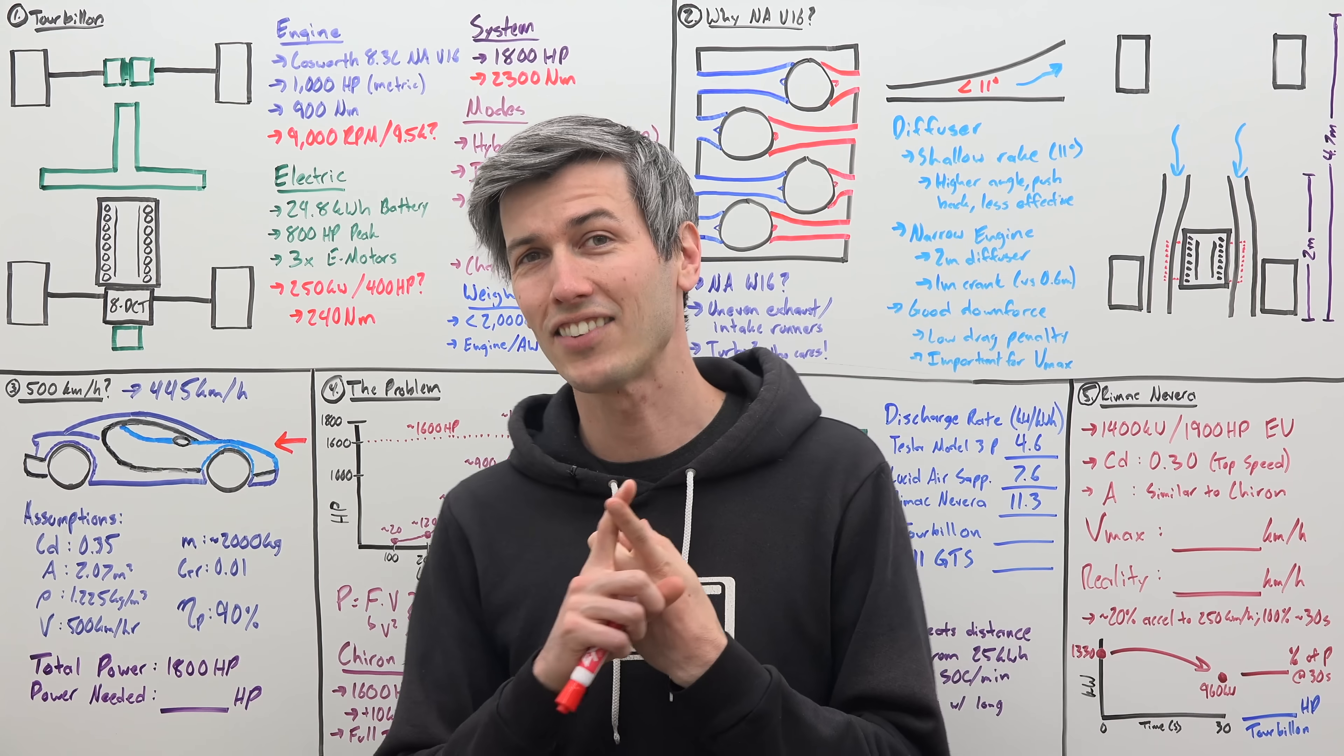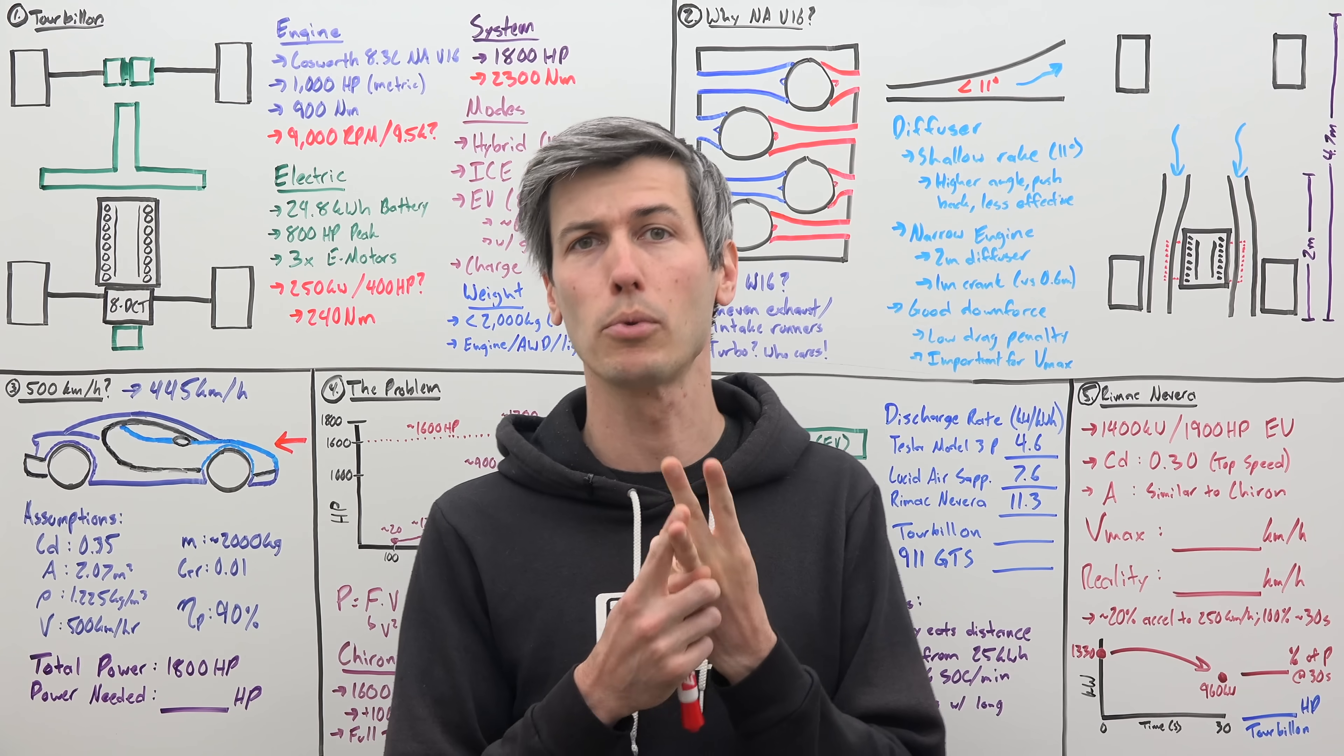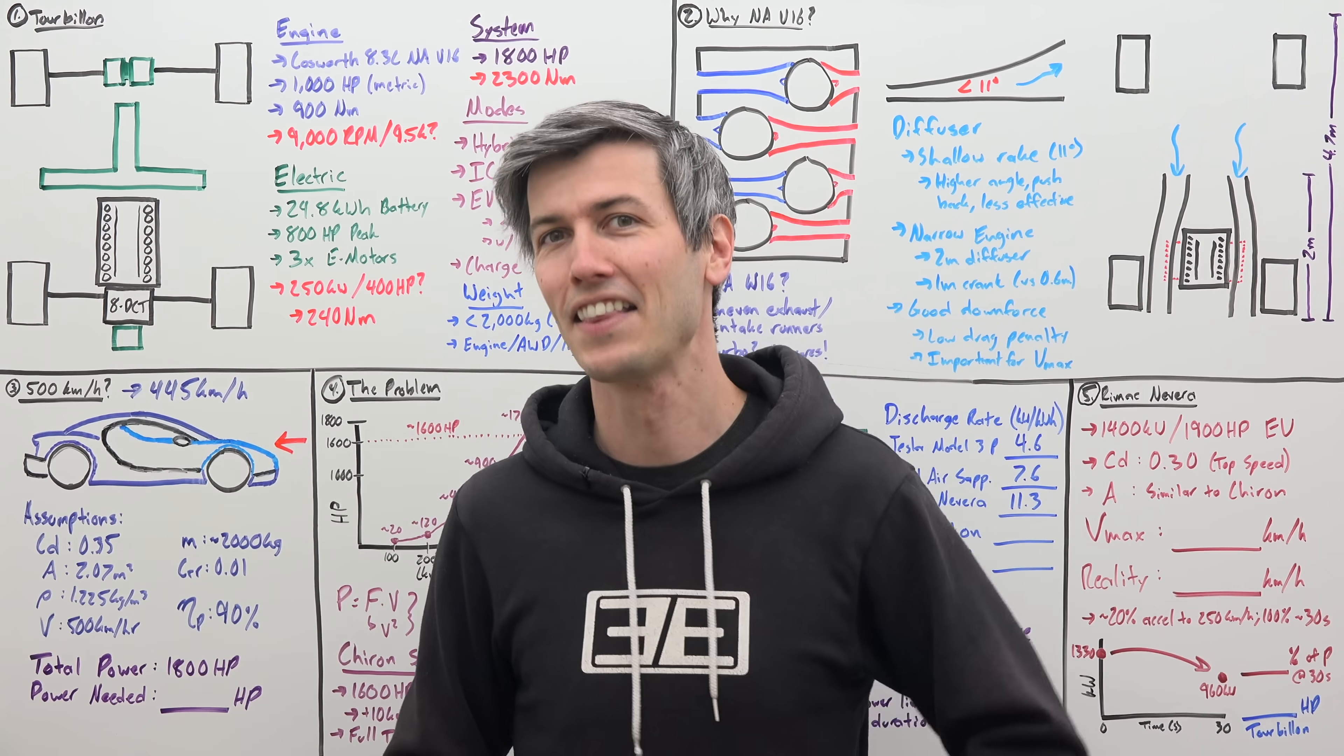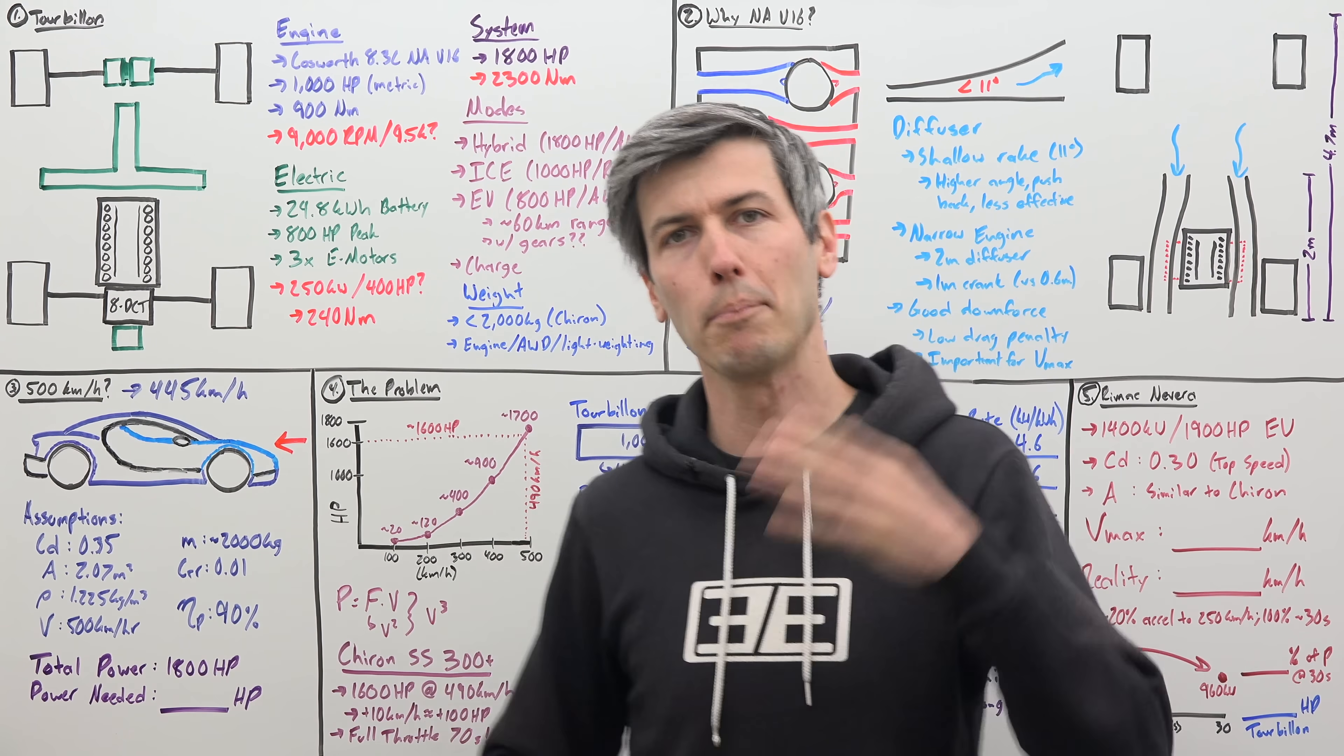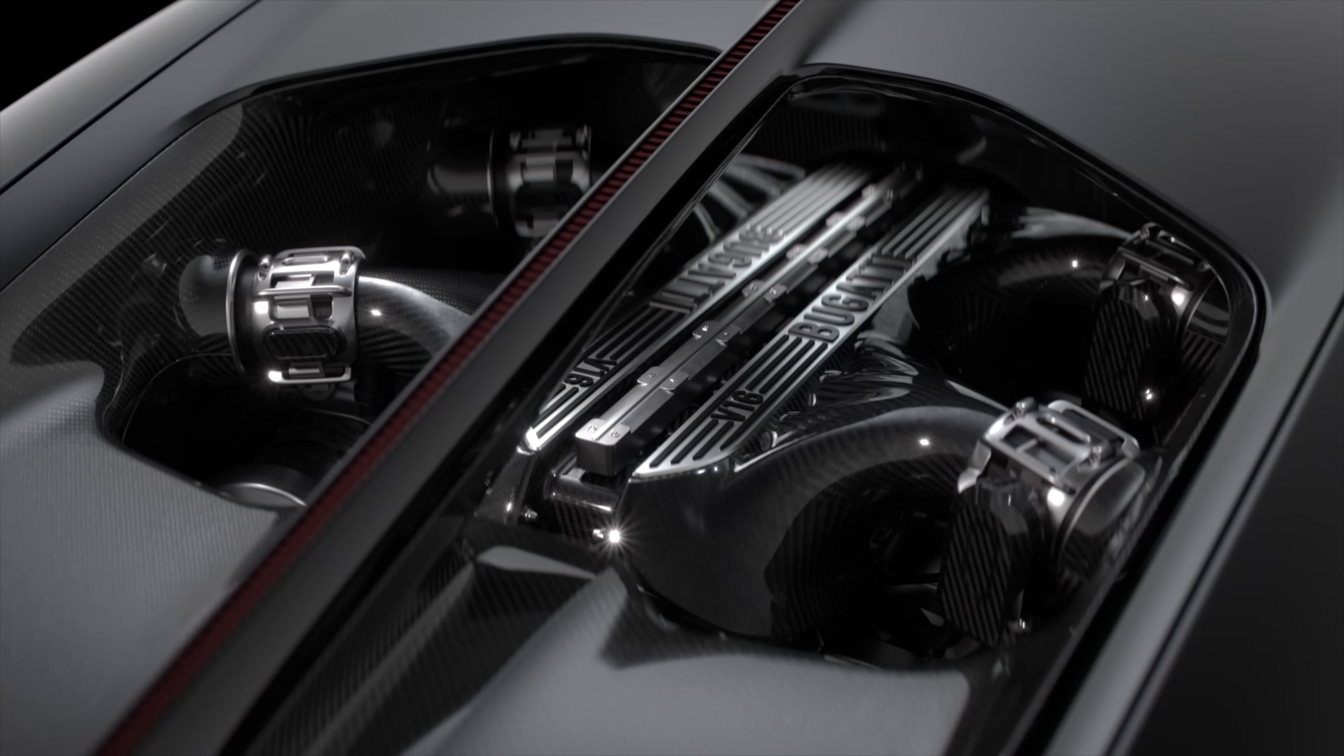Now, we do have to make some assumptions, but sometimes you can learn things from manufacturers by what they don't tell you. For example, they told us that it has a lower frontal area than the Bugatti Chiron. They told us that it's lighter than the Bugatti Chiron. They told us it has more power than the Bugatti Chiron. They said that it has a lower height than the Bugatti Chiron, but they did not tell us that it has a lower drag coefficient. So I suspect the drag coefficient is about the same or slightly worse.